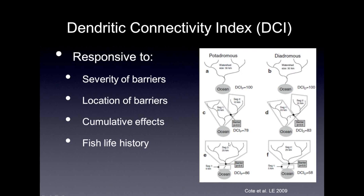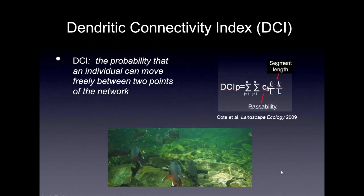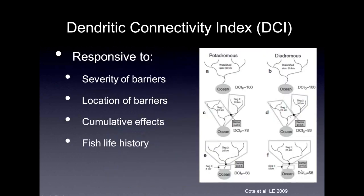On the left we have the potamodromous case, where the DCI is lowest when the barrier is near the middle of the watershed versus near the mouth. The opposite is true in the diadromous case, which makes intuitive sense — those fish have to migrate from the ocean up into the system. The DCI is lowest when the barrier is closest to the mouth of the system. So the DCI behaved intuitively as we expected.